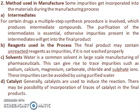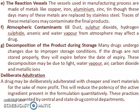Catalyst: generally, catalysts are used to induce the reaction, and there may be a possibility of incorporation of traces of catalyst in the final product. The reaction vessels: the vessels used in the manufacturing process are made up of metals like copper, iron, aluminum, zinc, and tin, though these days many of these metals are replaced by stainless steel. Traces of these metals and their ions may contaminate the final product.